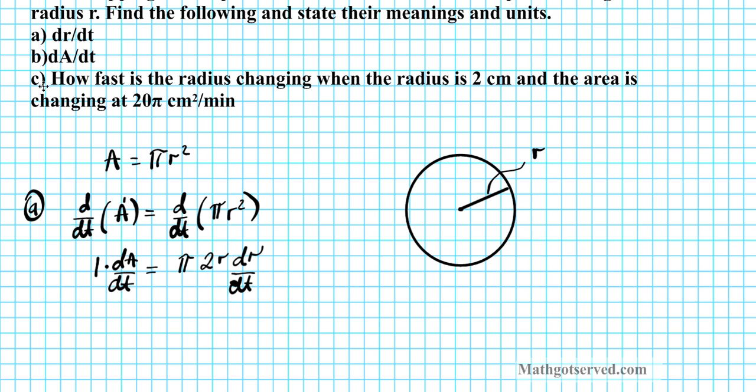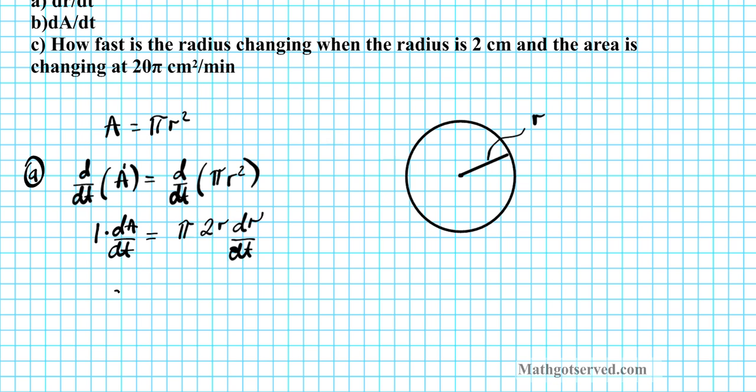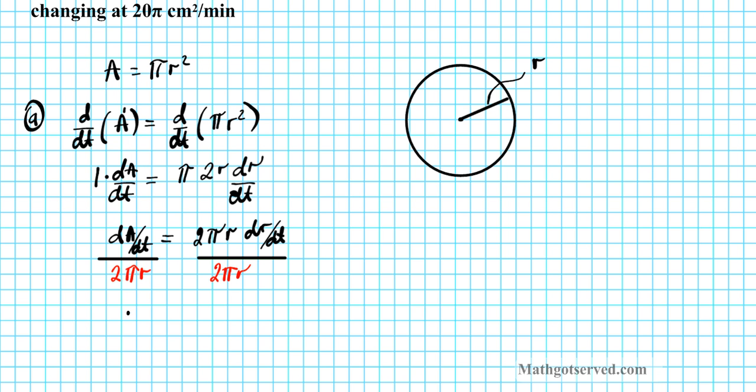We're asked to solve for dr/dt, so we'll just isolate dr/dt. Let's rewrite this as dA/dt equals 2 pi r dr/dt. If you notice, 2 pi r is the circumference of the circle. So to isolate dr/dt, I'll divide both sides of my equation by 2 pi r. And then we'll have dr/dt equals dA/dt divided by 2 pi r. Let's box it.